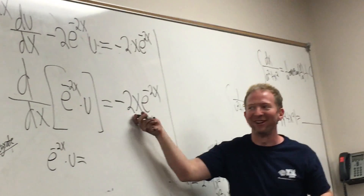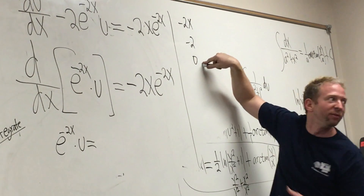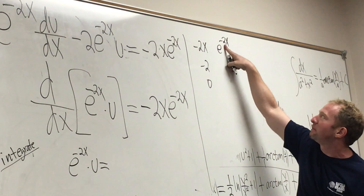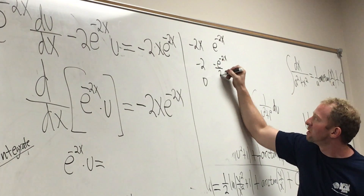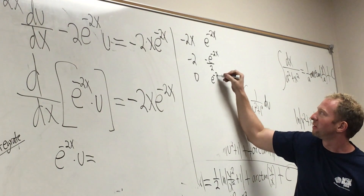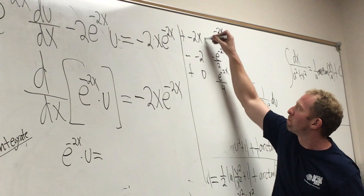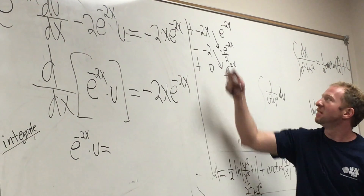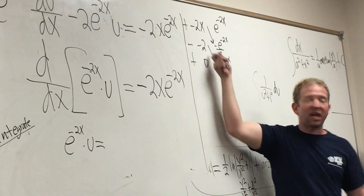Let's use tabular integration on the right side. So: negative 2x, negative 2, 0 — just differentiating. And then we integrate e^(-2x), just keep dividing by negative 2 each time. Then you put your plus, minus, plus signs and draw arrows. Negative and negative is positive — and the 2s cancel out. This is nice.